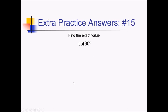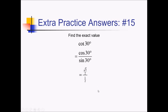For this problem, we're trying to get the cotangent of 30 degrees. I'm going to express this with sine and cosine — this is really cosine of 30 over sine of 30. Cosine of 30 is radical 3 over 2, and sine of 30 is 1 over 2. If we put all that together, we can cancel out the denominators of 2, and that just leaves us with radical 3 over 1, which is just radical 3.